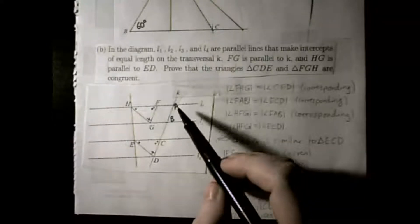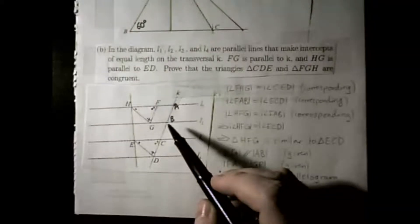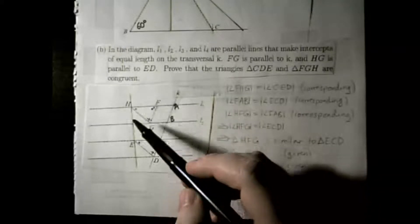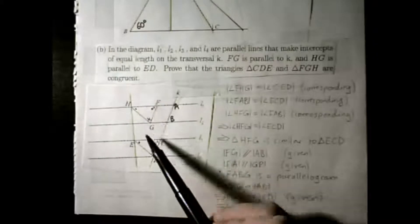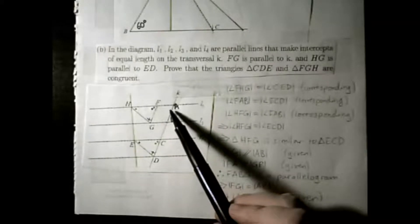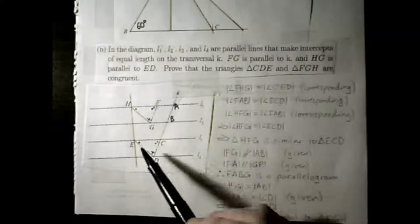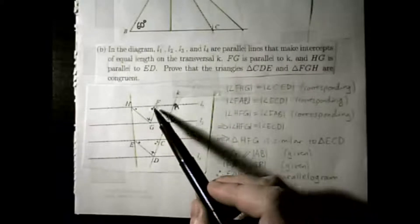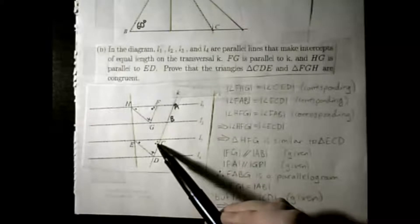To get set up, I've marked point A where L1 and K cross, and point B where L2 and K cross. I've also drawn a line passing through H and E. Starting to compare angles: angle FHG must equal angle CED, because HG and ED are parallel, making this new line a transversal, so these are corresponding angles. Similarly, angles HFG and HAB are corresponding and equal, and angles ECD and FAB are corresponding and equal.